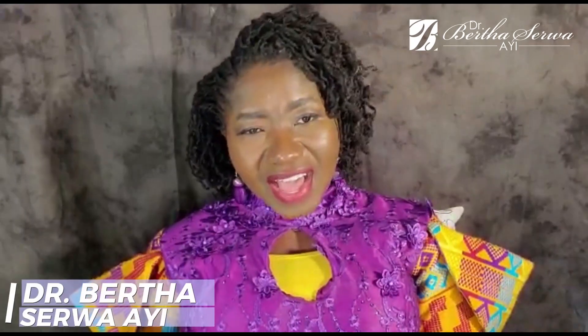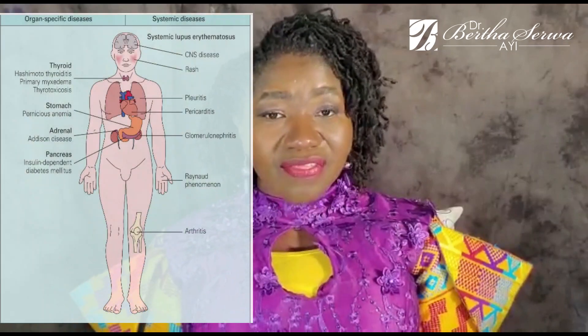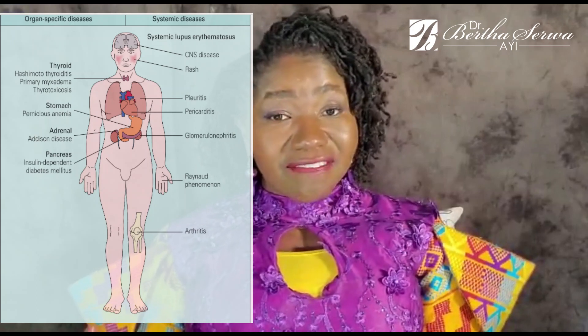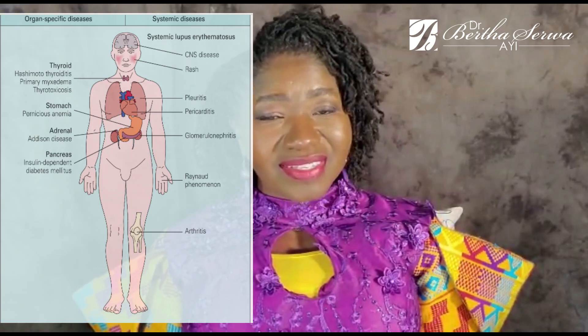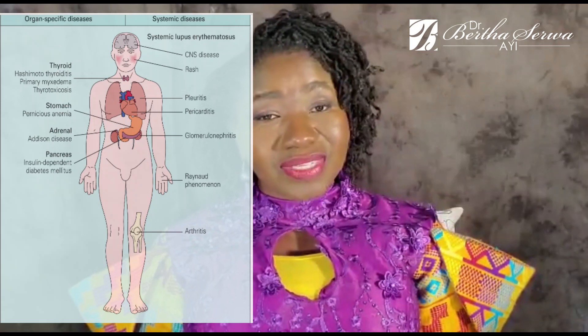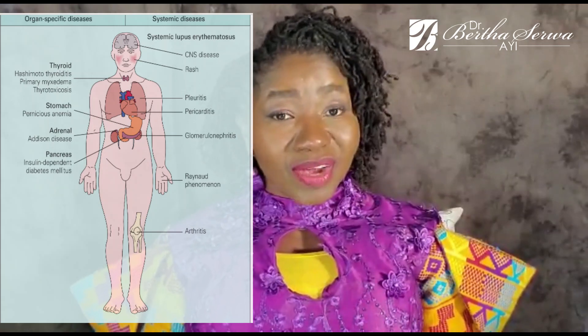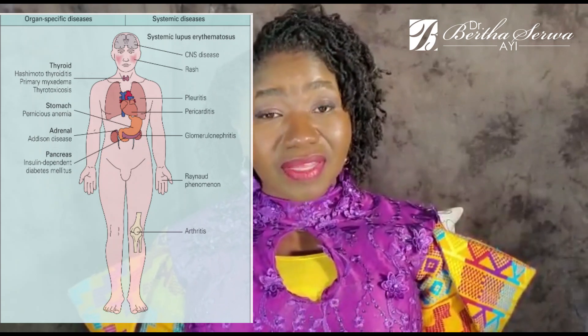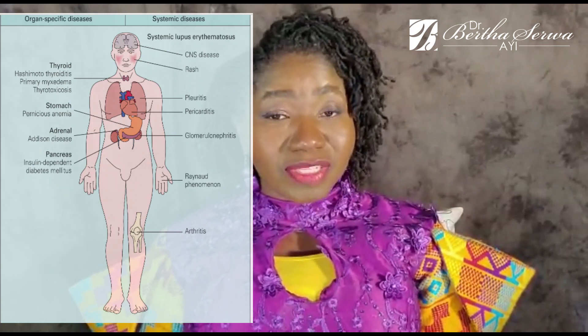It affects the skin, the eyes, the muscles, the joints, and so many other organs. I'm going to show you an image on the screen — on the left side you have those diseases that affect single organs, and on the right side you have systemic lupus erythematosus that affects so many organs. That is why it's called systemic lupus — it means it involves multiple systems.